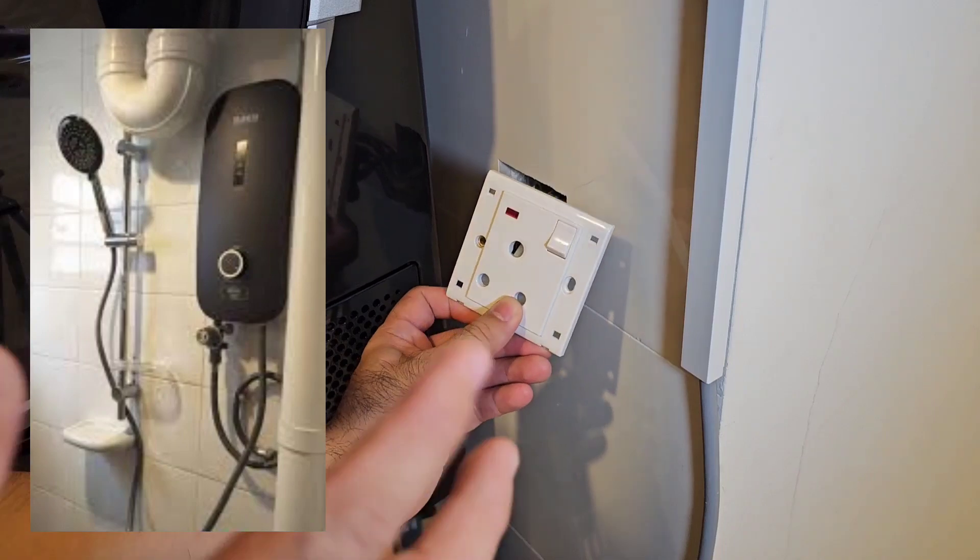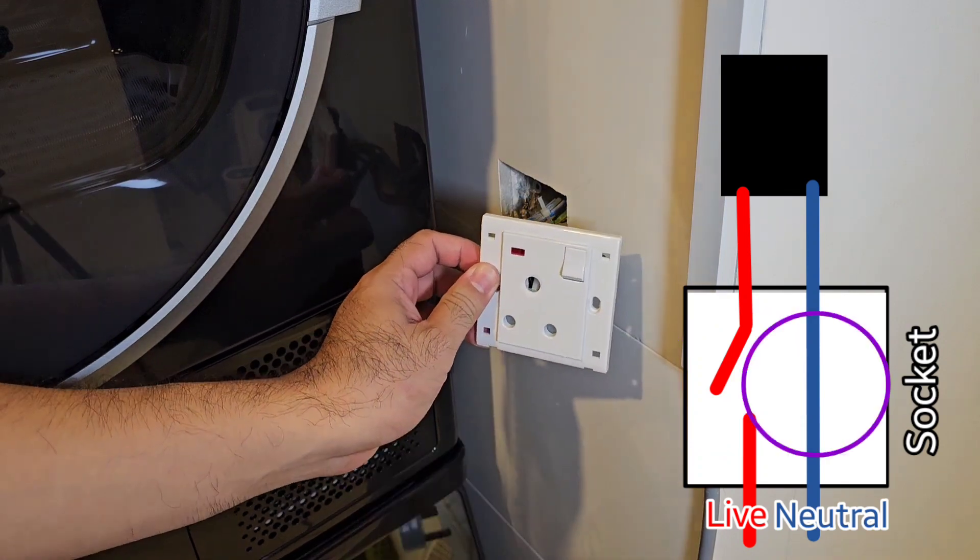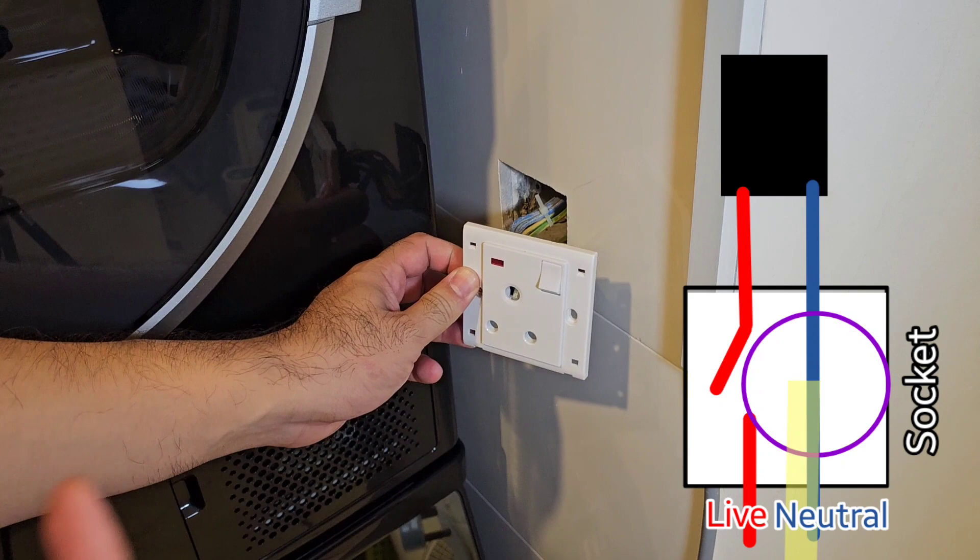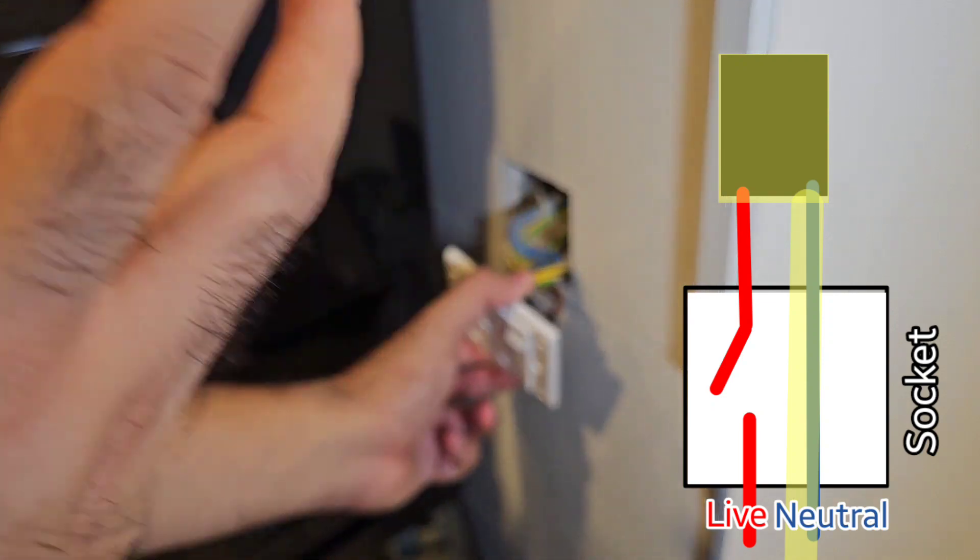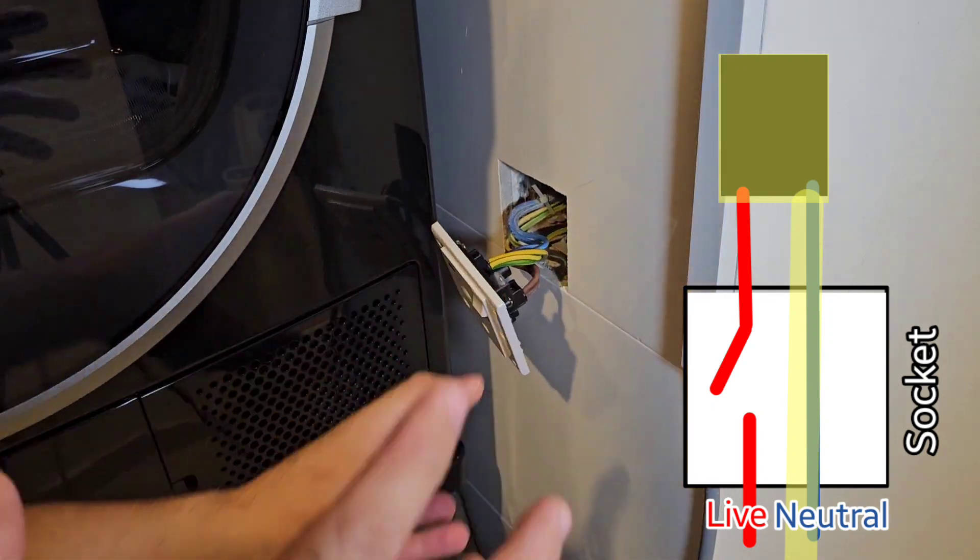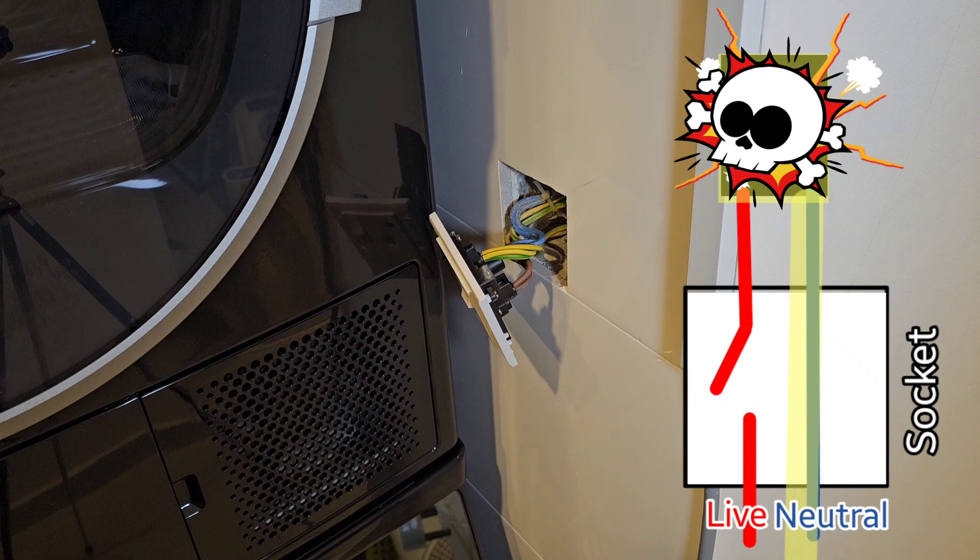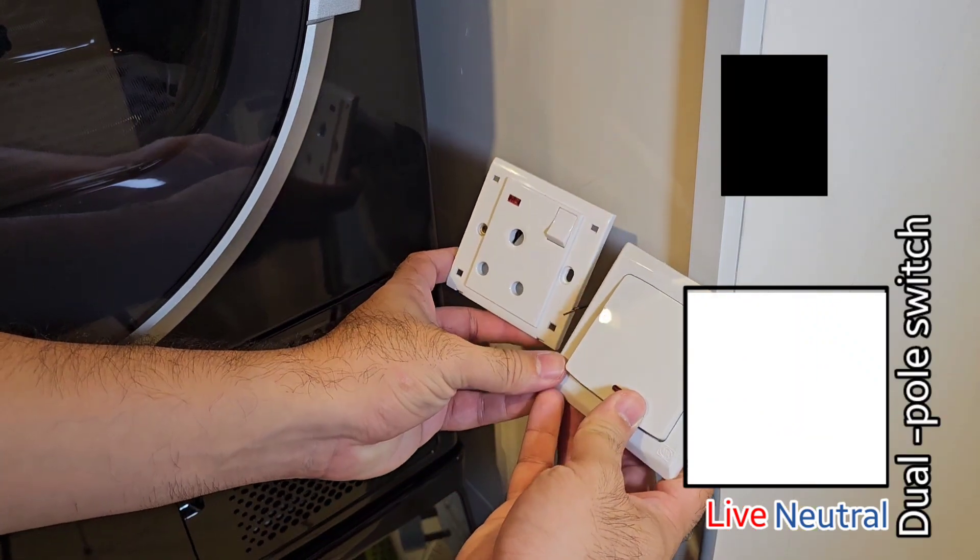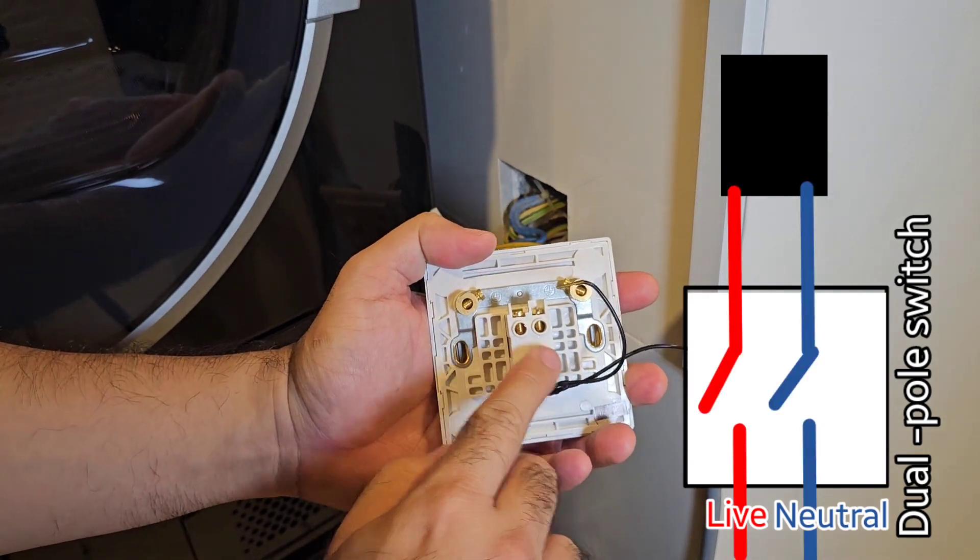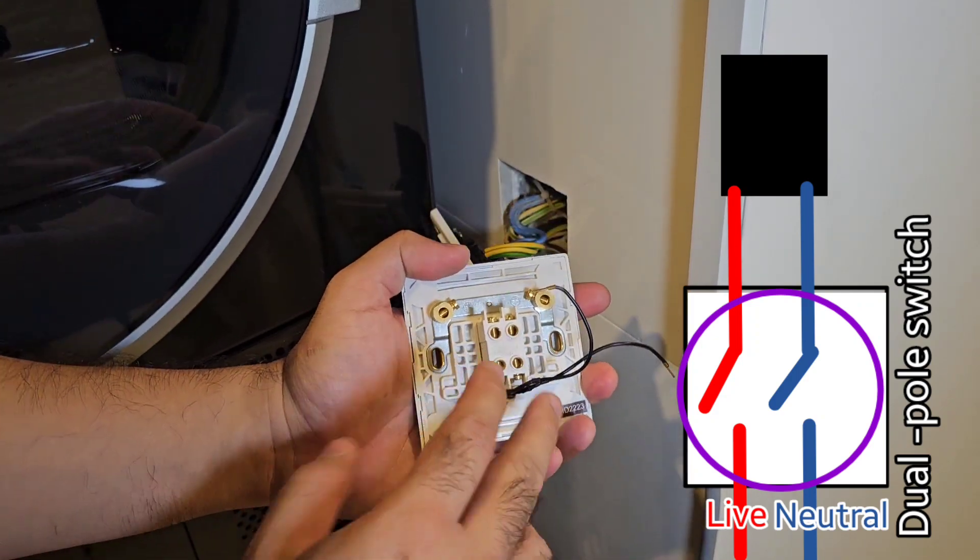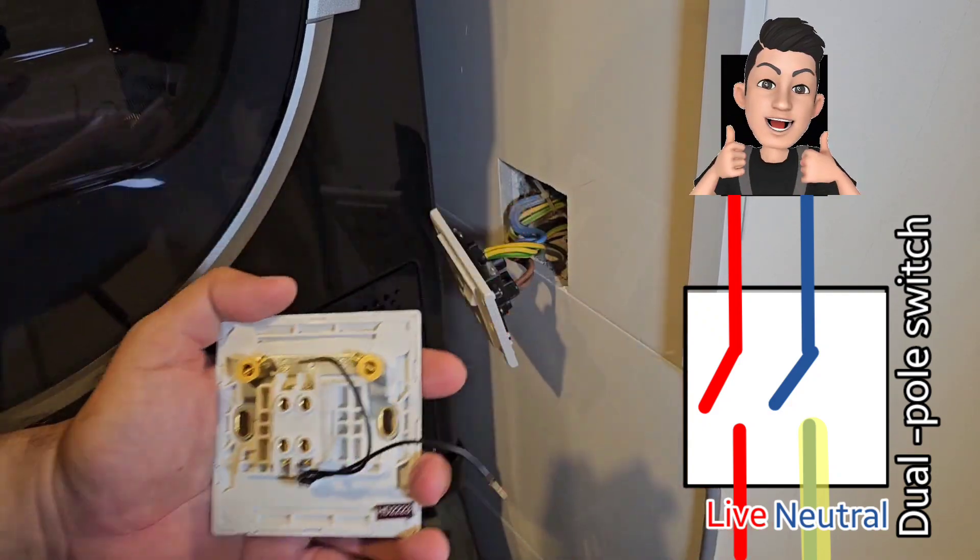So with these kind of water heaters you do not want to have a socket because a socket only controls the live and it cuts the live off. The neutral is still connected, and what happens is if your neutral is energized or there's a short somewhere, you're gonna get current flowing into your water heater. If anyone were to touch it, if the water heater is faulty, if your RCCB is faulty, they may very well end up hurting themselves. So the best thing to do is to change this into a dual pole switch, and what this switch actually does is breaks the contact of your live and your neutral. So if there's any fault in the circuit, your water heater is totally isolated from the house.